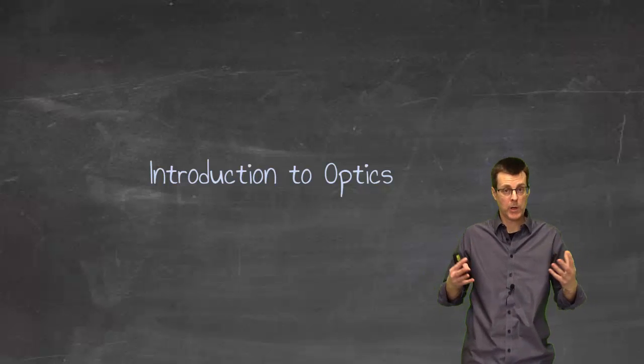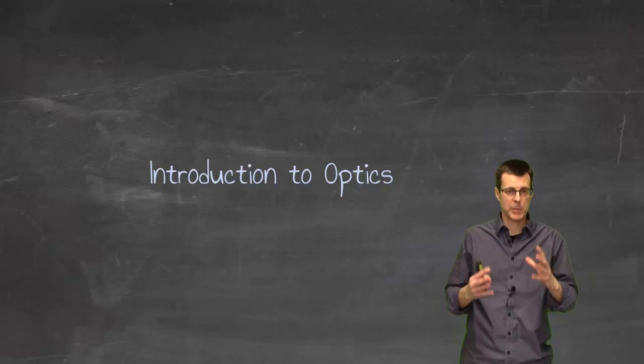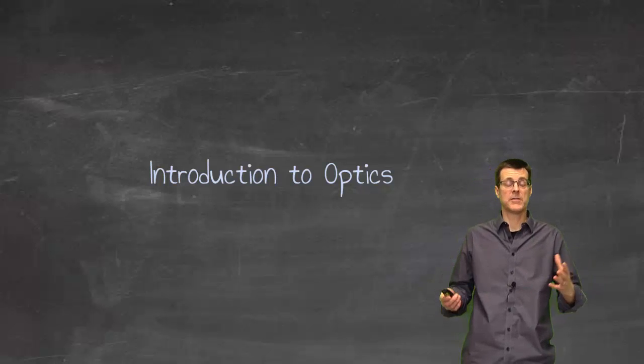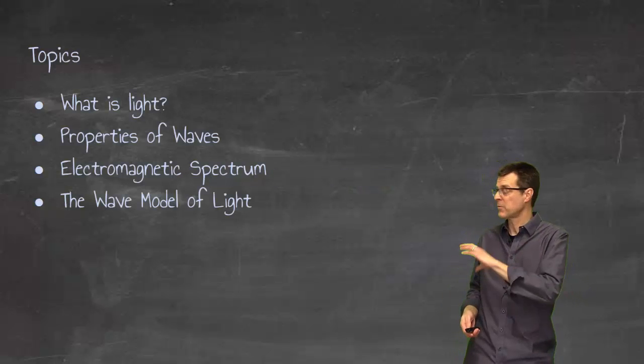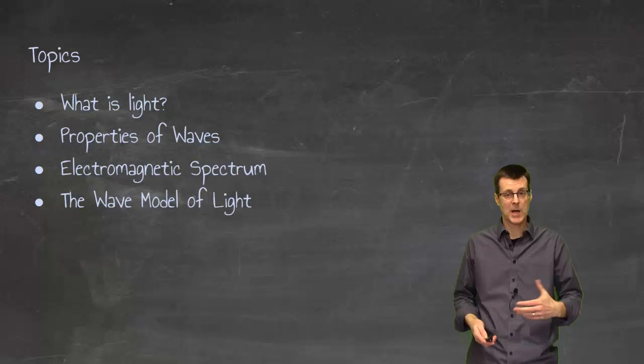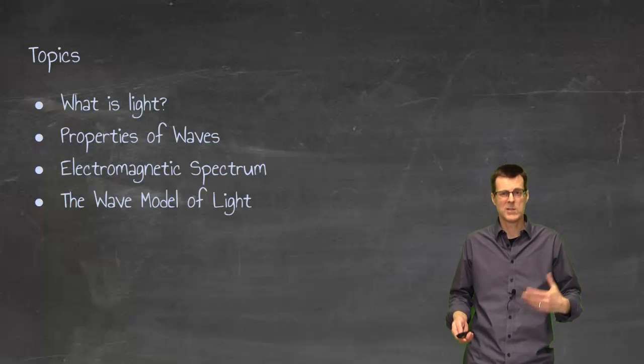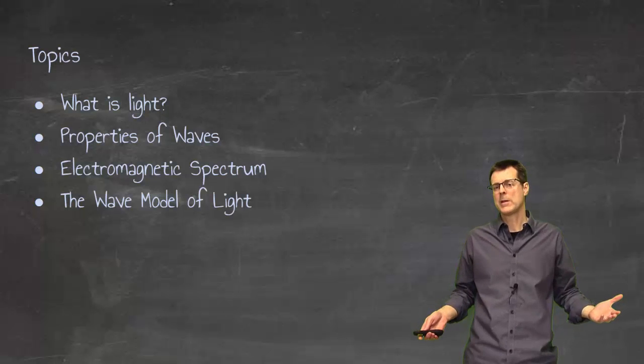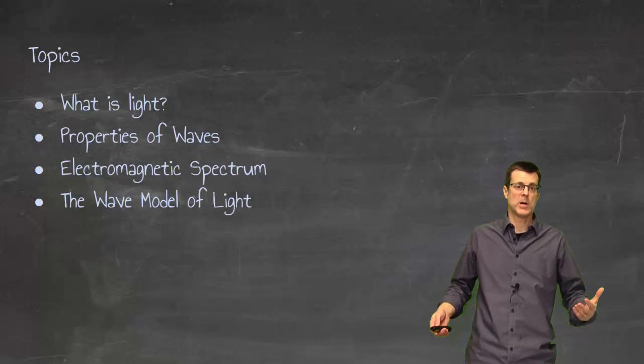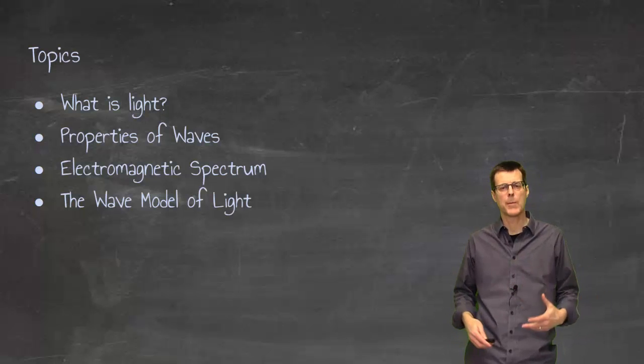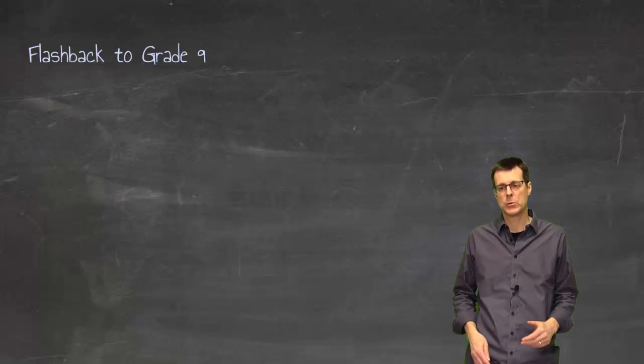In this lesson we're going to start talking about what it means to learn about optics. Optics is going to be all about light, but there's actually a lot of different pieces to that understanding of light. So for this one we're going to focus ourselves on these four topics: What is light? What are some of the properties of waves? What do we mean by the electromagnetic spectrum? And finally the wave model of light.